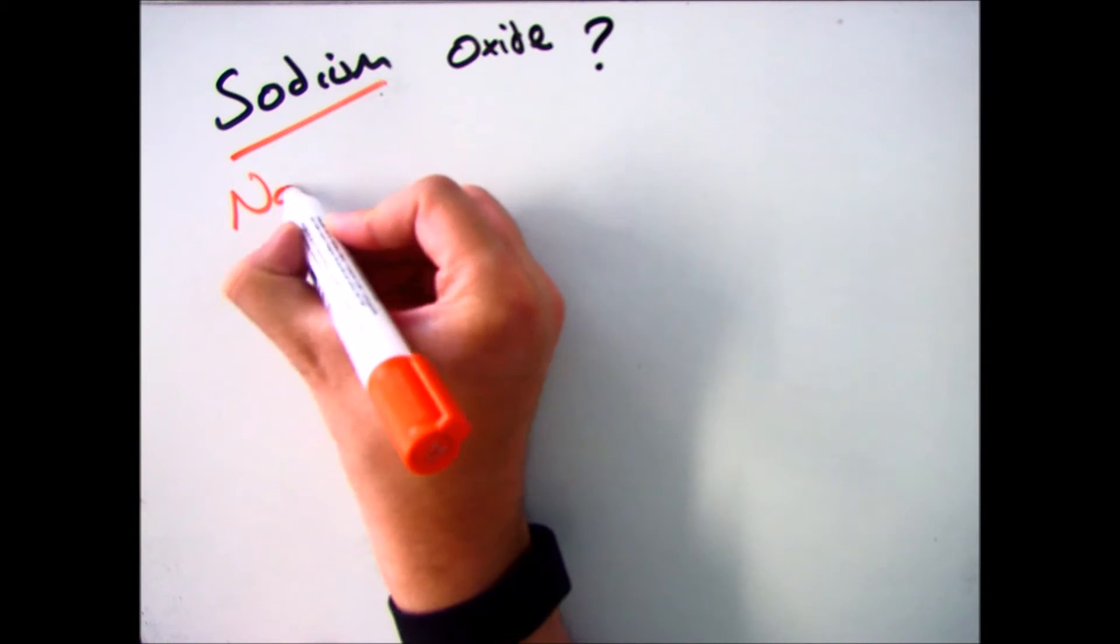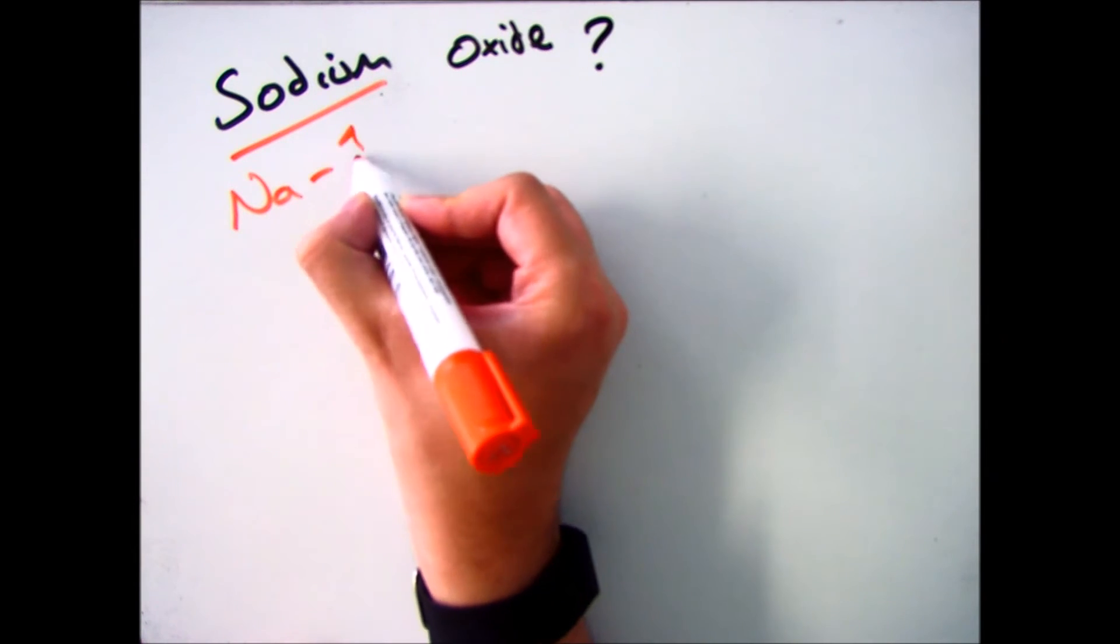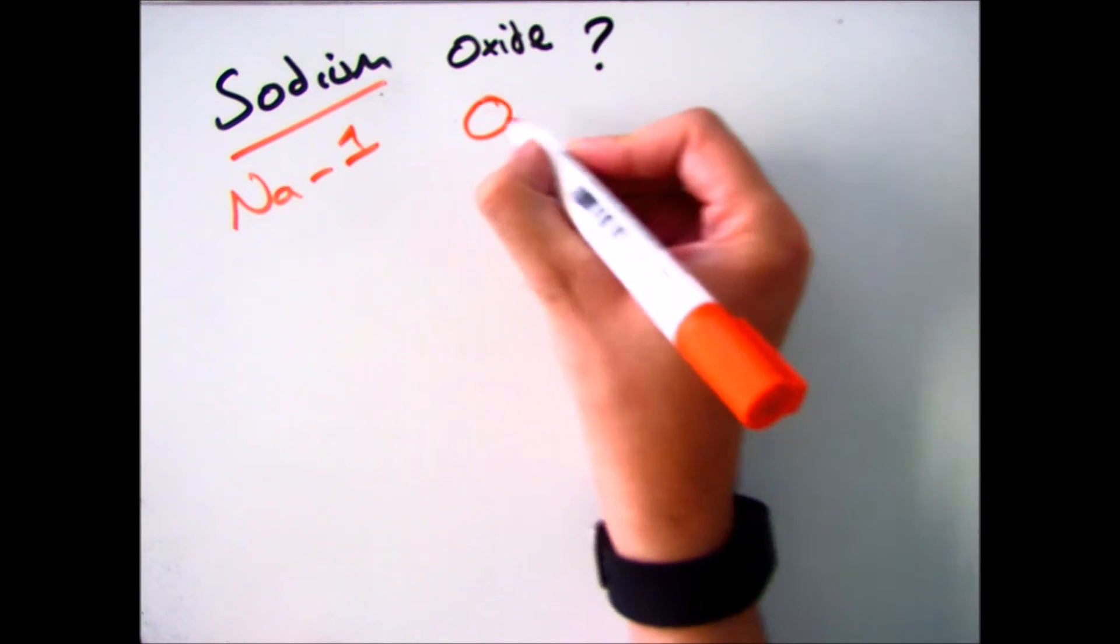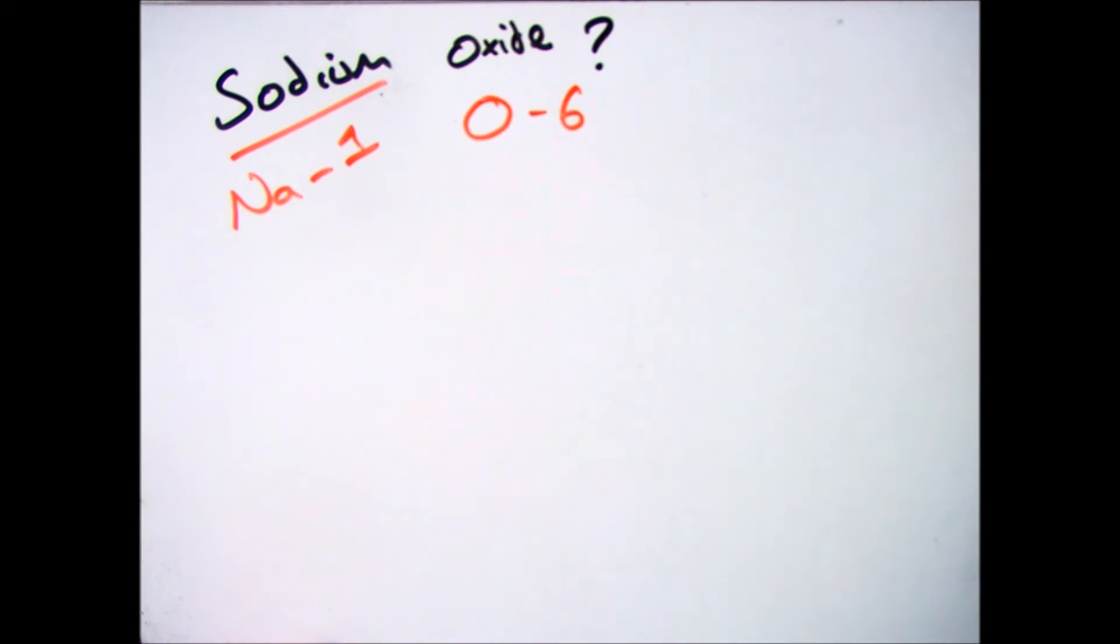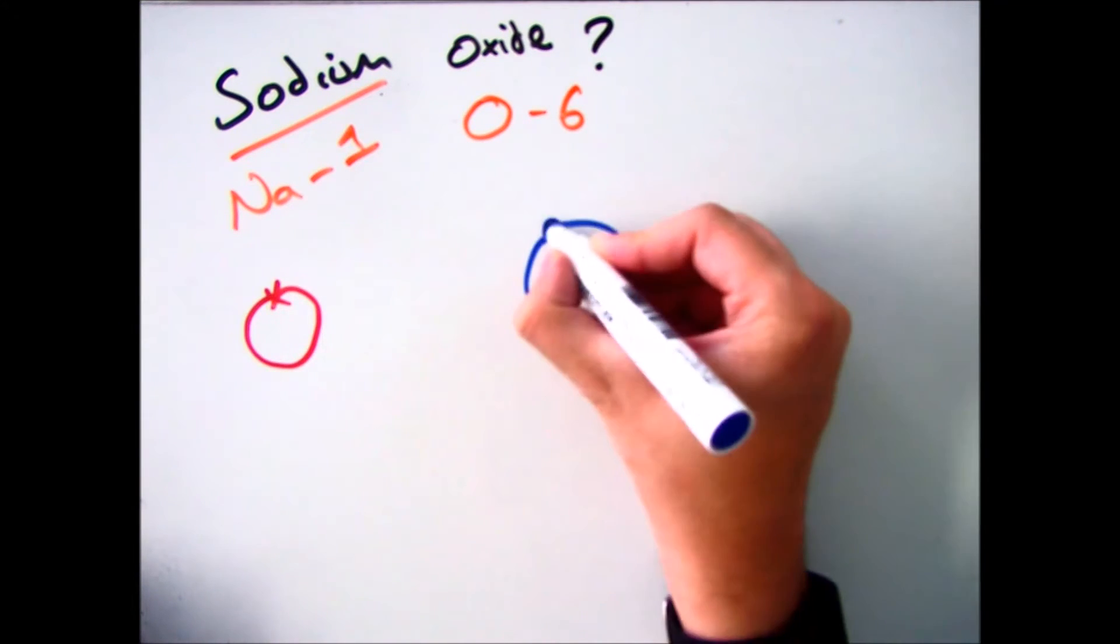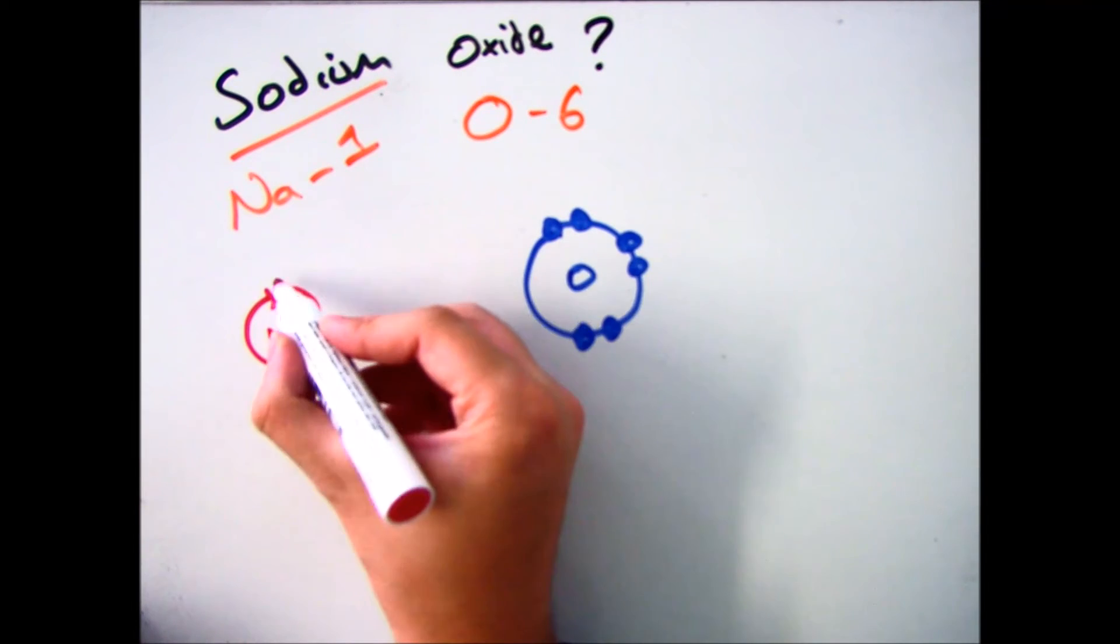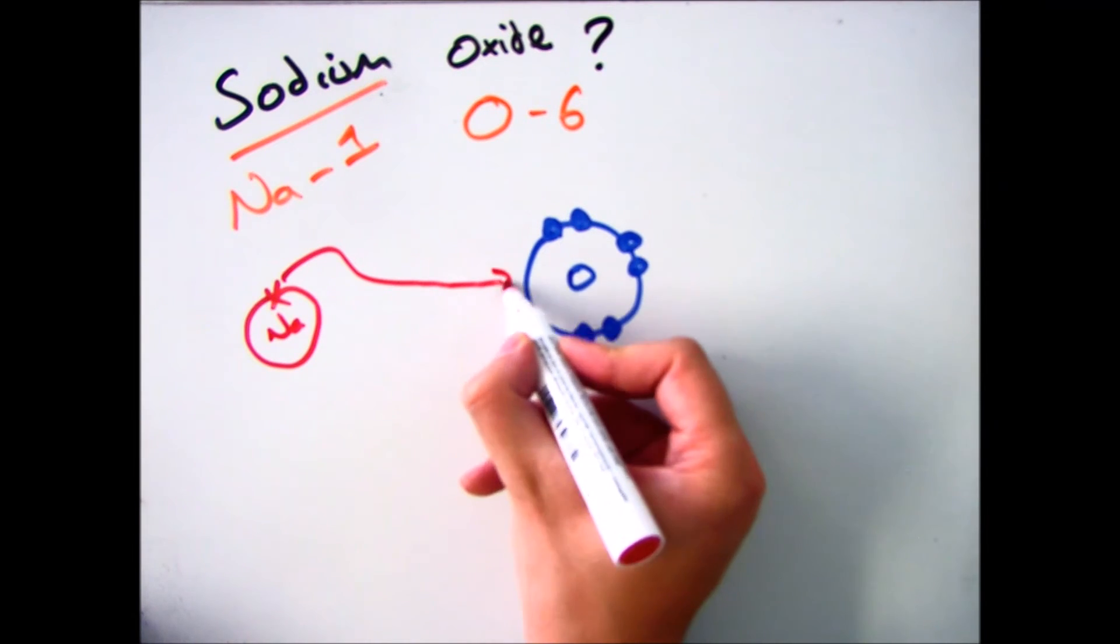So if we have a look at another example, sodium oxide, we've got Na, which is in group 1, and we've got oxide, which is oxygen, which is in group 6. So start by drawing the electronic configuration for both, remembering you only need to do the outer shells when you're doing ionic bonding.